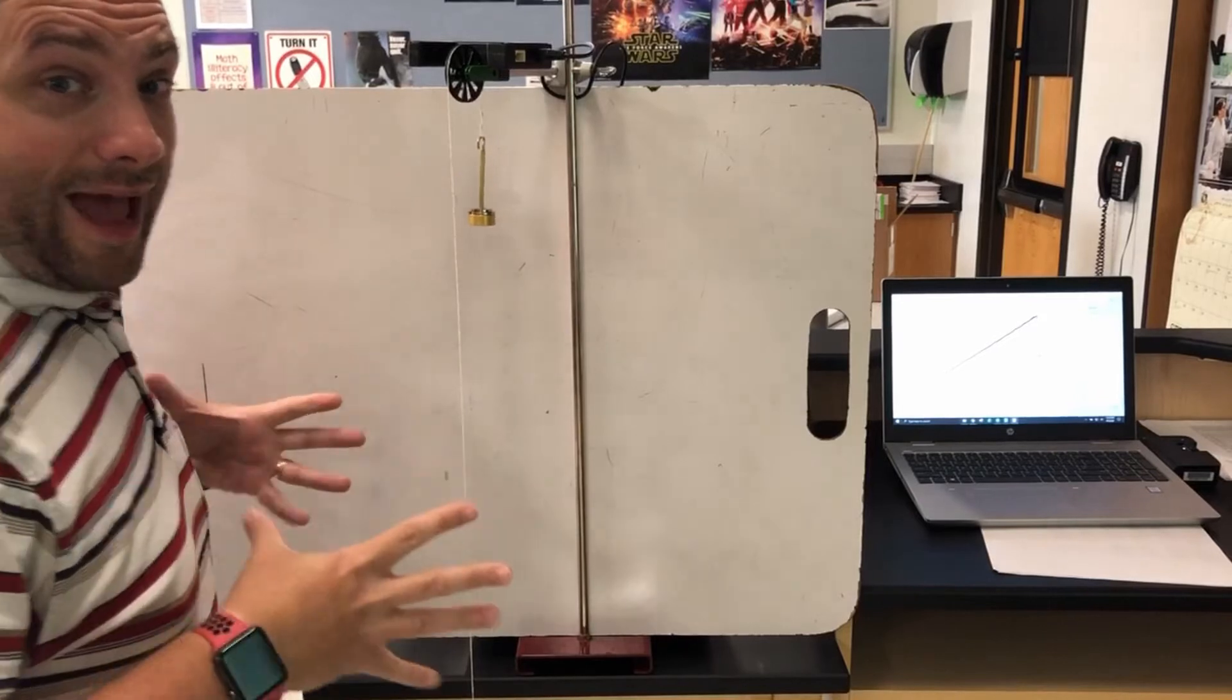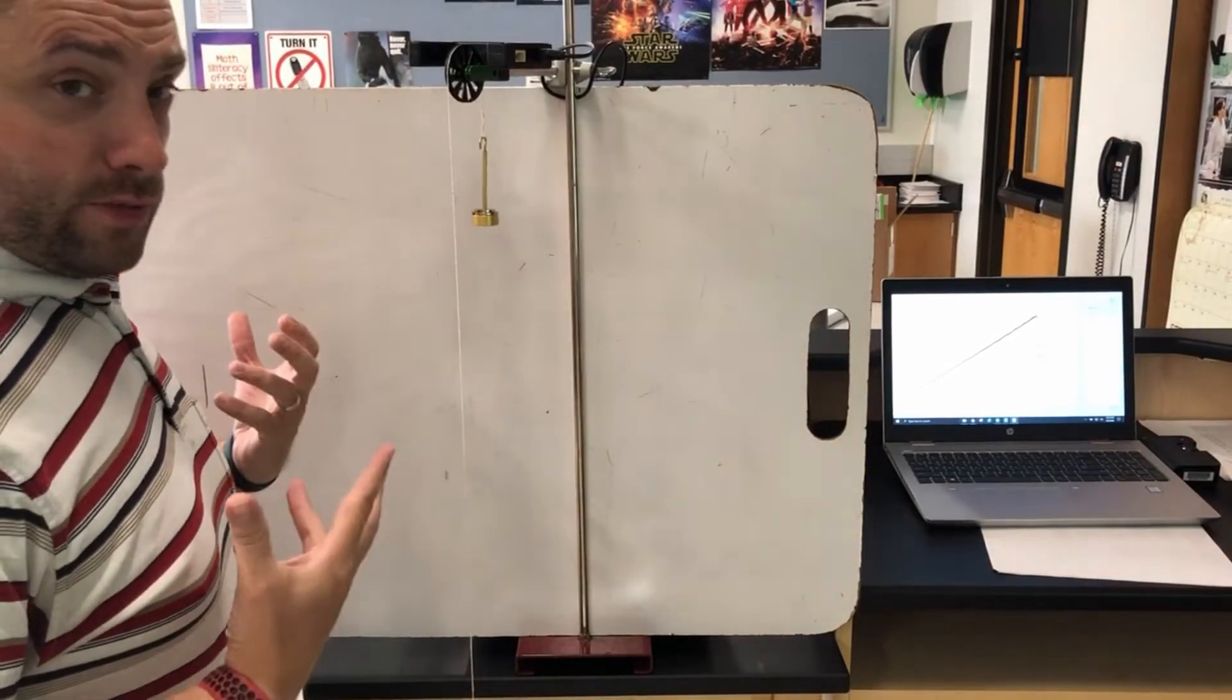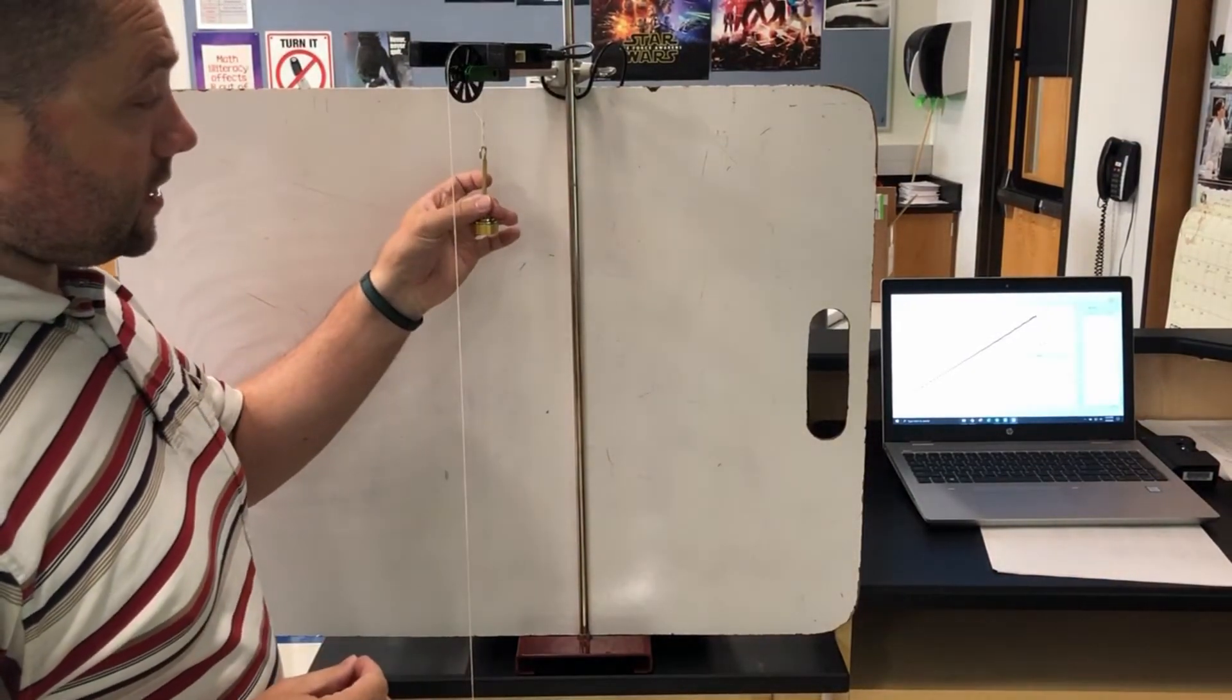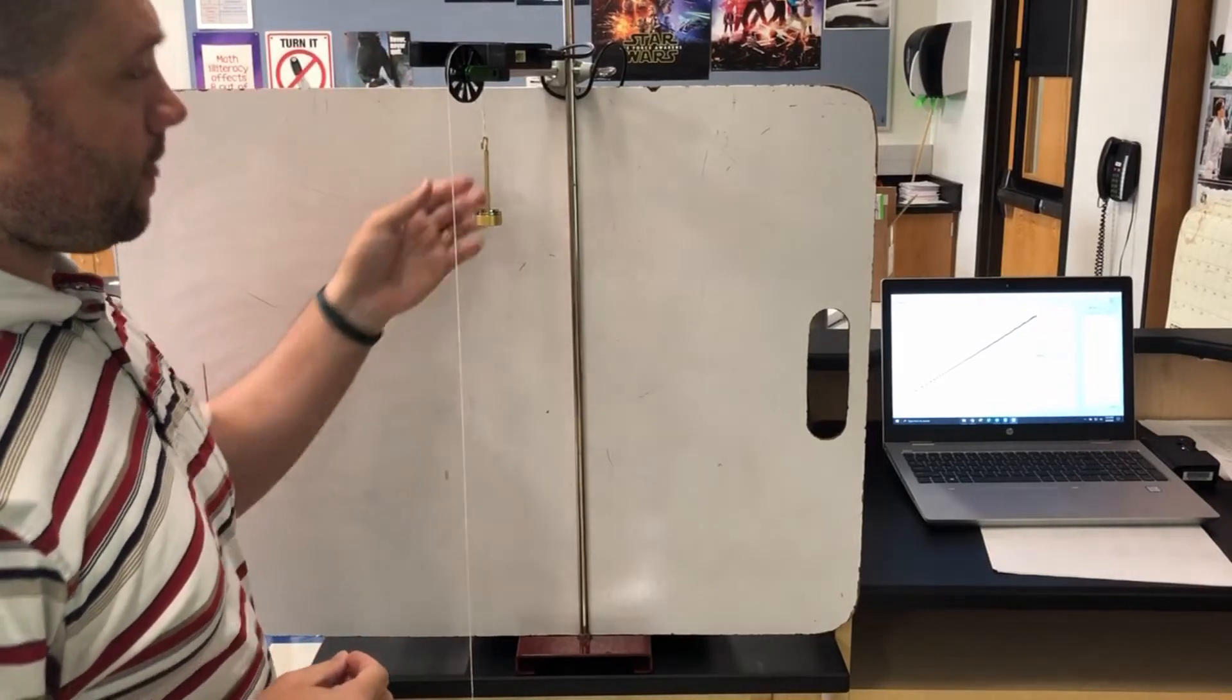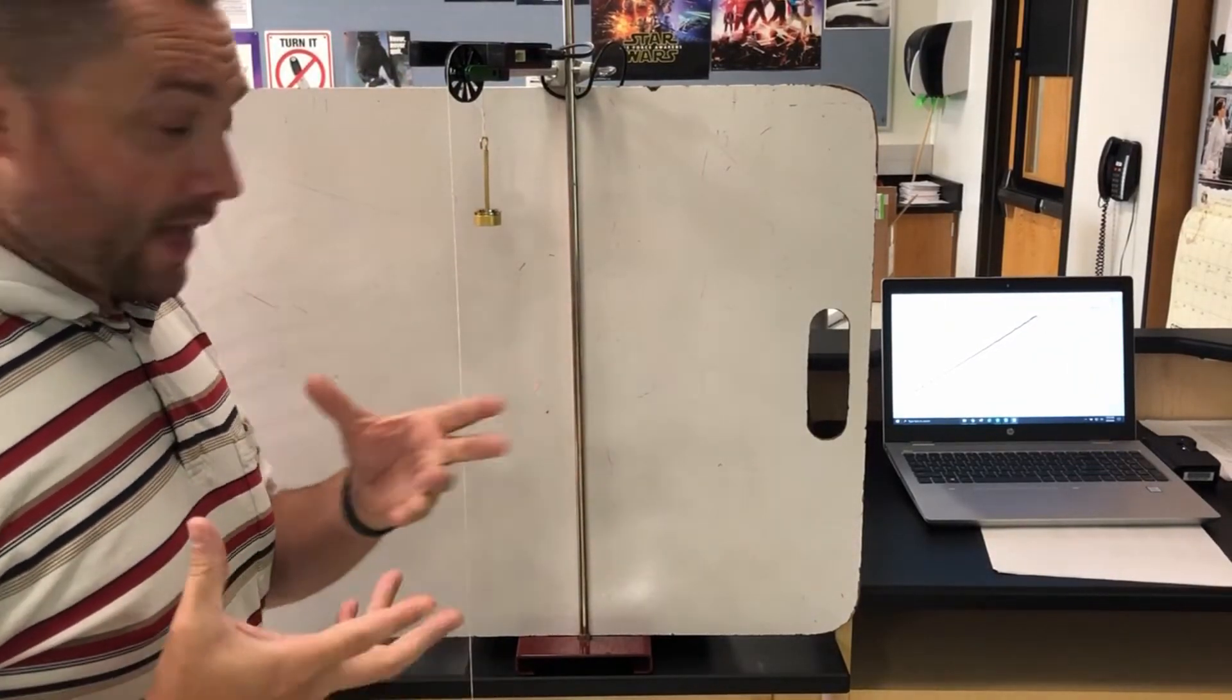Okay, so this is the Atwood's machine. The Atwood's machine is two masses that hang over a pulley. The masses are of different mass,